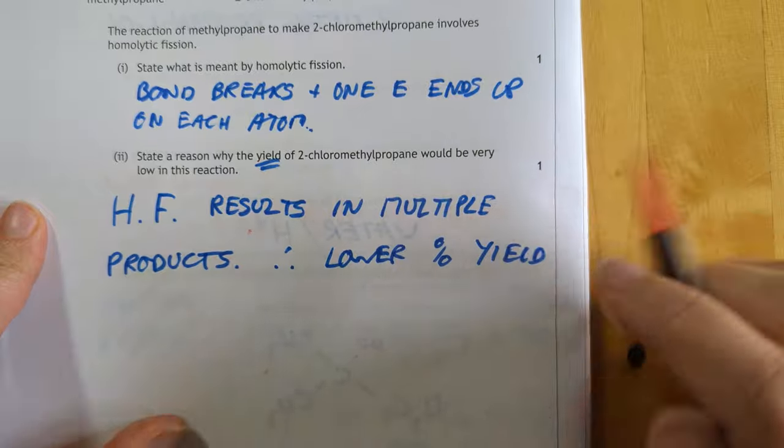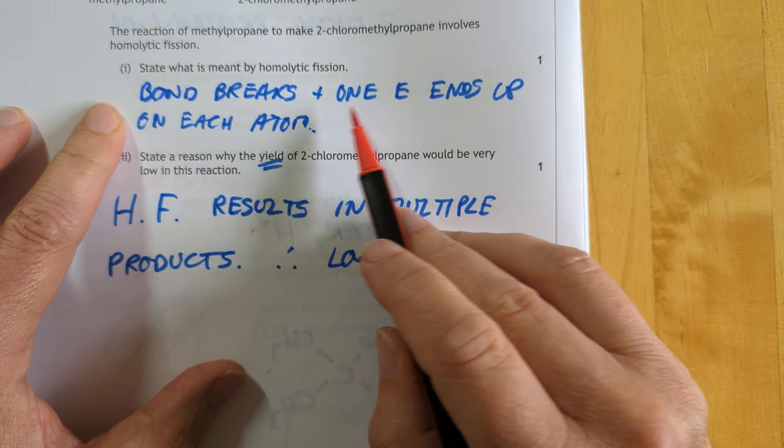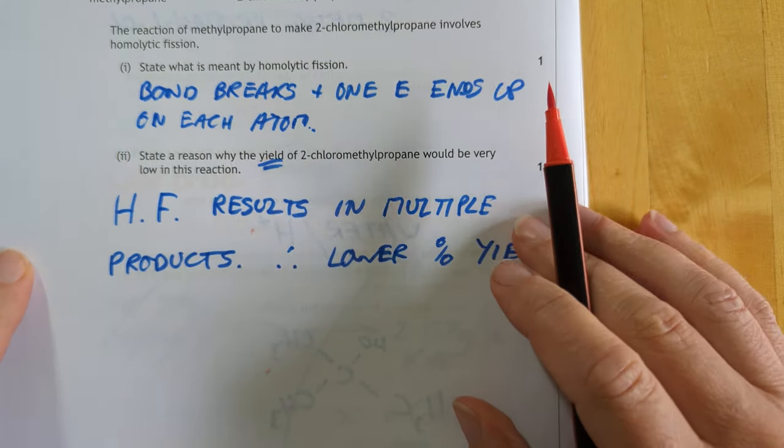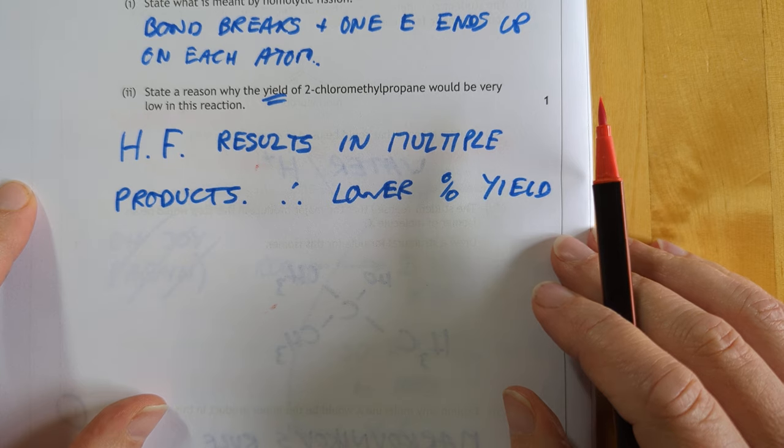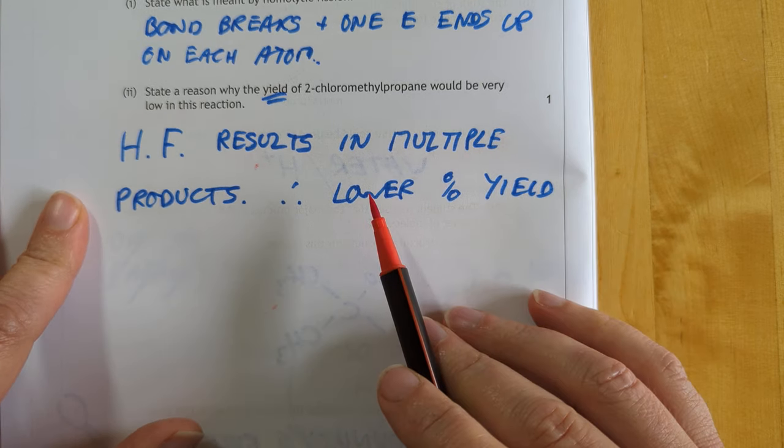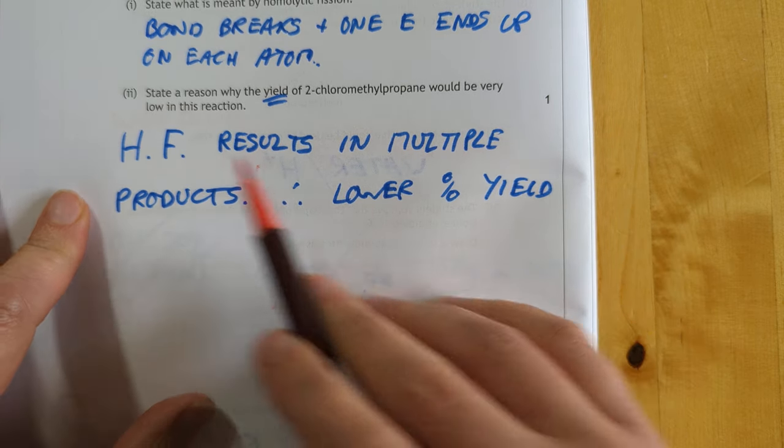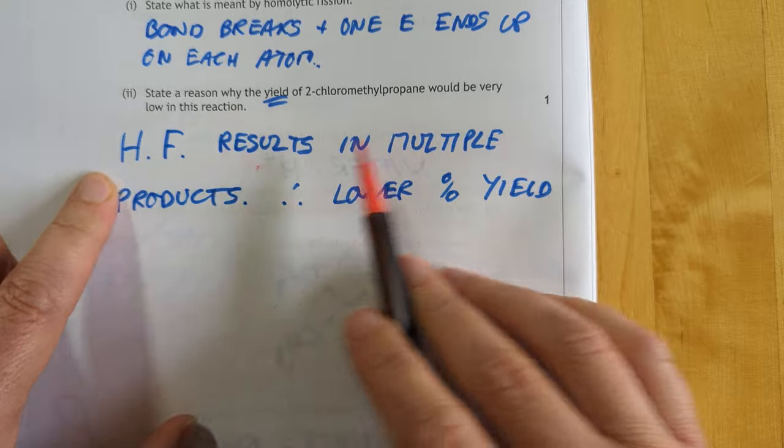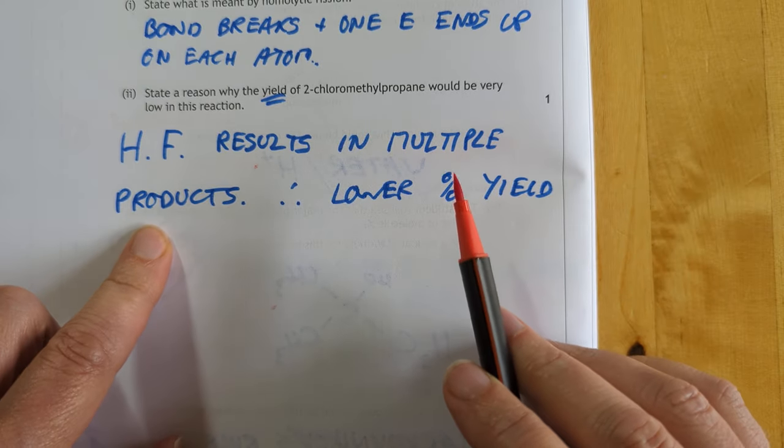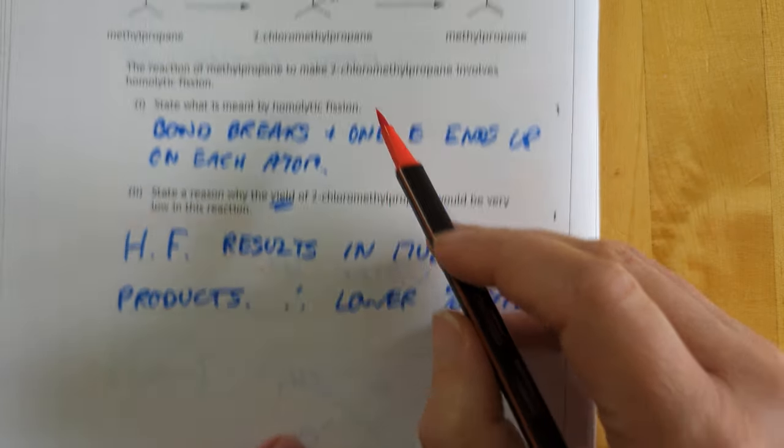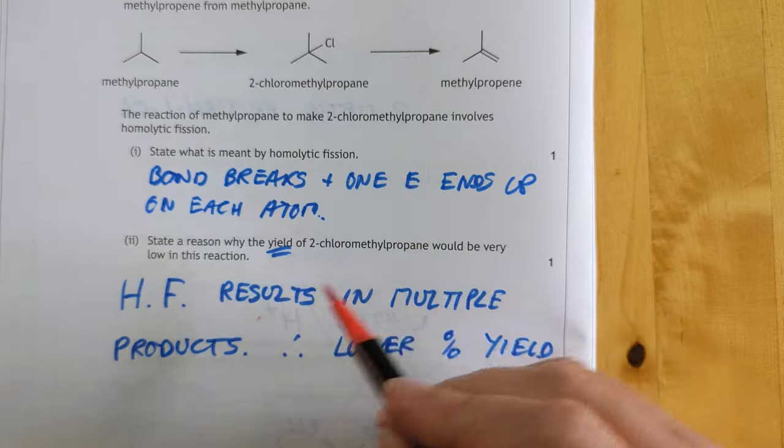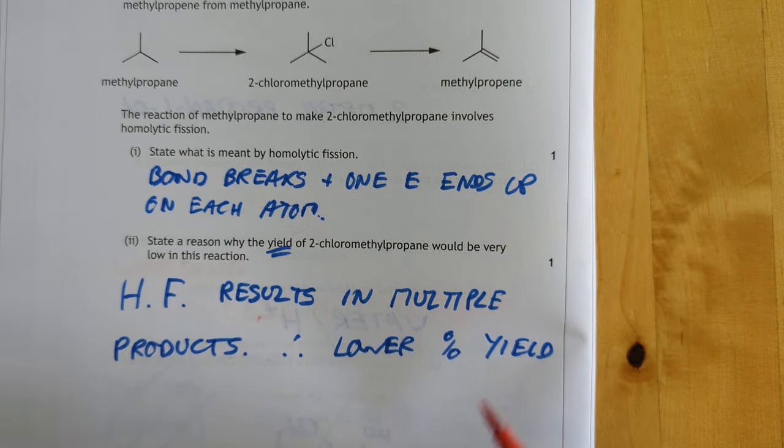Nearly done. Homolytic bond breaking. That's when the bond breaks and one electron ends up on each atom. Homolytic fission results in a whole rake of products. Therefore you will still get this as a product. It's just that you get loads of other ones and it's the yield they're actually looking for. So the percentage yield has gone down because you get loads of other stuff.